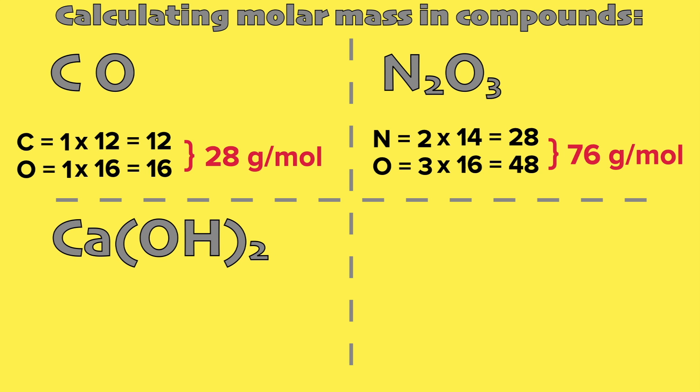In the next example, we have one calcium, two oxygen, and two hydrogen atoms. We then multiply those values to the molar masses of each element. Add the final values and we will get 74 grams per mole.